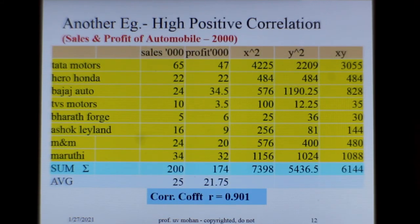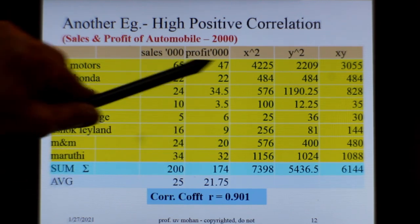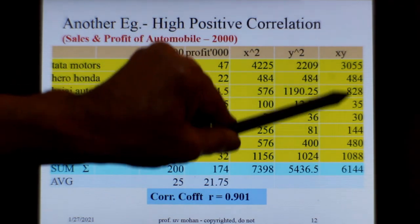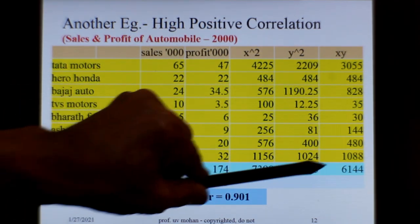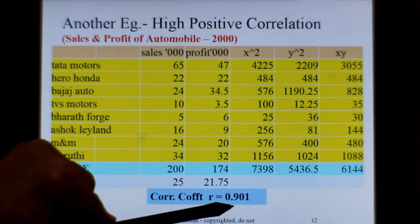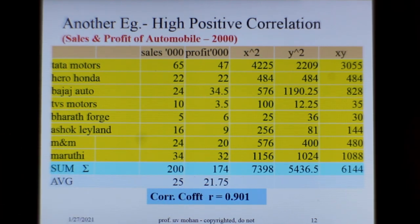Let us take another example. This is the sales and profit of automobiles in the year 2000. Various manufacturers are shown here, and their sales figures are given here. So you can once again calculate the x square and y square and xy, and the sigma are all given here. And when you calculate, you will find the correlation coefficient as 0.901. That means year 2000 has been very good for the automobile manufacturers. It is showing a very high correlation. And the sales and profits are pretty good in all the organizations. Definitely 0.9 is a very good correlation, and it is a positive correlation. That means as the sales increase, profit also increases.